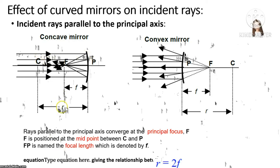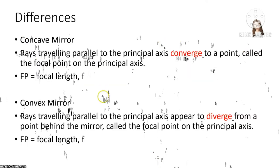CP equals R, and F is half of R. So the relationship between R and F is: R equals 2F, or F equals half of R. For a concave mirror, a ray traveling parallel to the principal axis converges to the focal point FP. For a convex mirror, a ray traveling parallel to the principal axis also relates to the focal length FP.